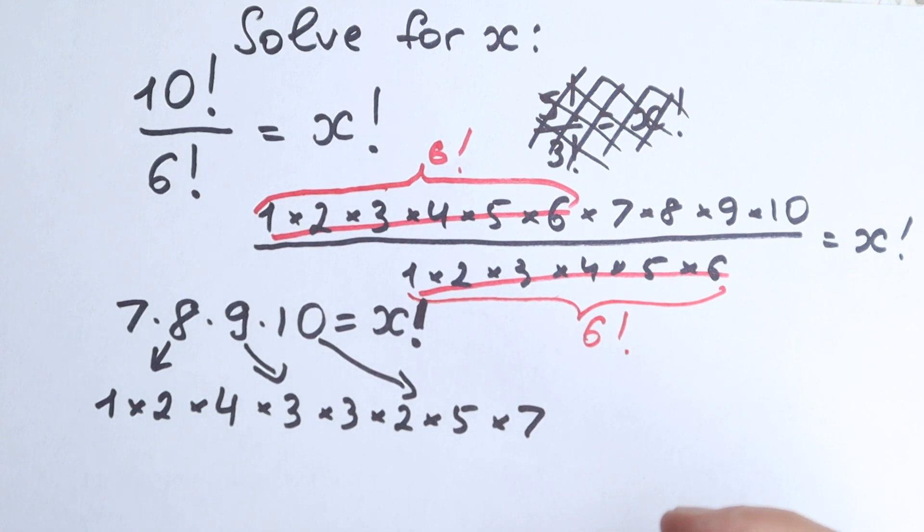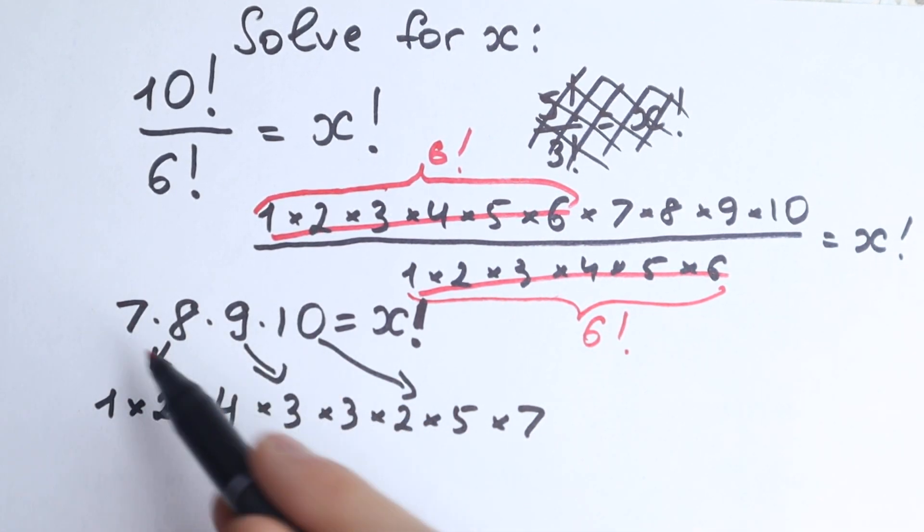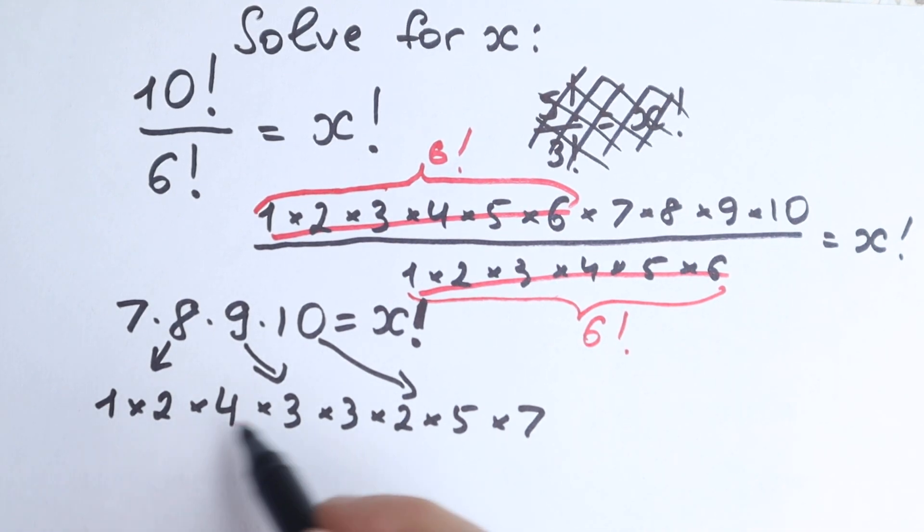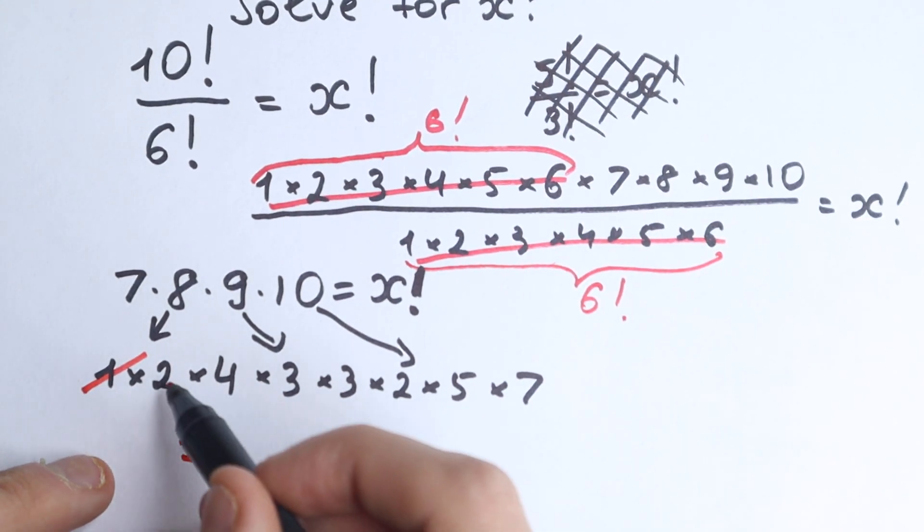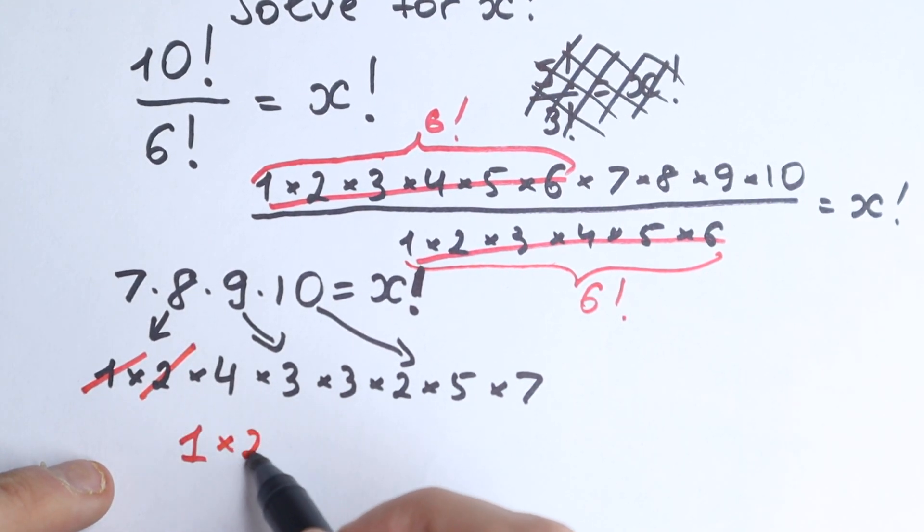Very important moment, because right now we're going to create our order. We need to find what is this factorial, okay? So, we have 1, I write this 1 right here, we cancel it from here. Okay, we have 2, we cancel it, I write it times 2.